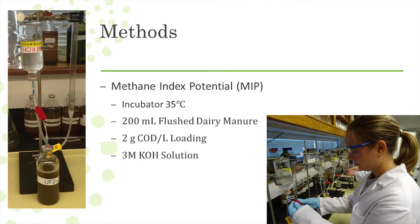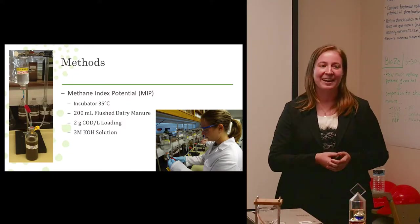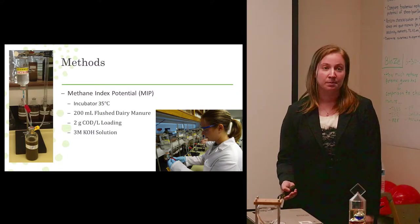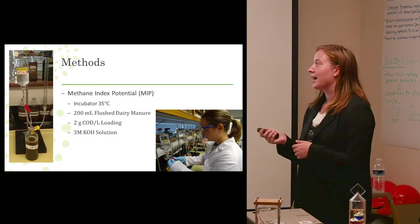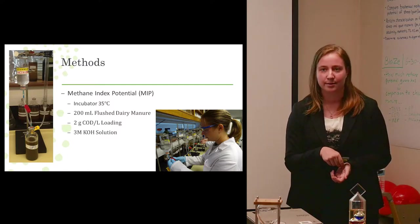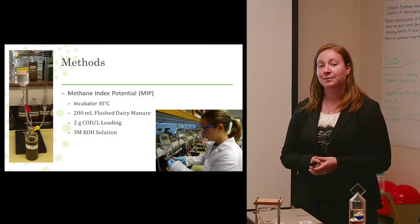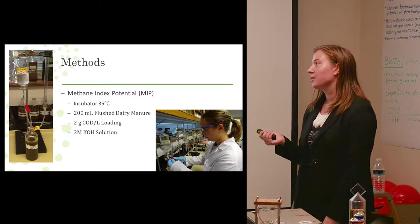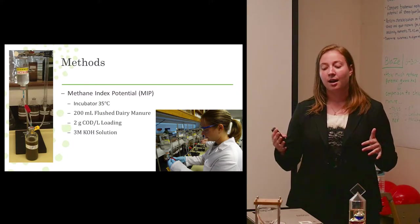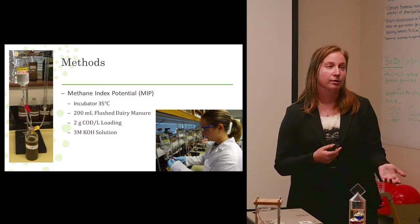So the other big constituent of my project is the methane index potential, the MIP assay. And it's exactly how the other two presentations went. So I had 200 milliliters of flushed dairy manure as my inoculum. And it was in triplicate bottles. And I added two grams of COD per liter of loading. So that's how much algal biomass I added into each of my bottles. And I kept those bottles at 35 degrees C, which is in mesophilic conditions. And when it came time to actually harvest the biogas, I used a KOH barrier solution. And as described earlier, the methane is really the only gas that's being measured because the CO2 will react with the KOH. And that way the displacement is really only that of the methane gas.